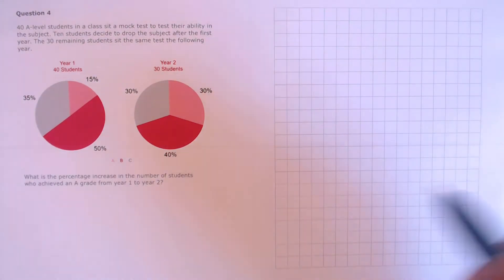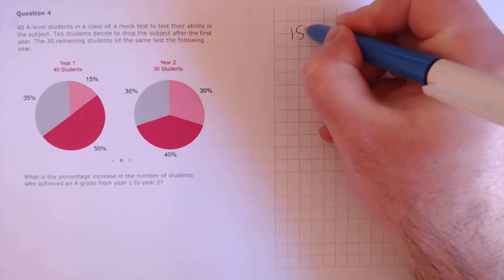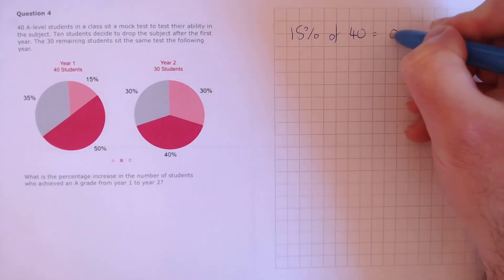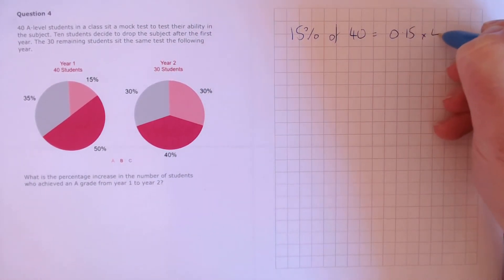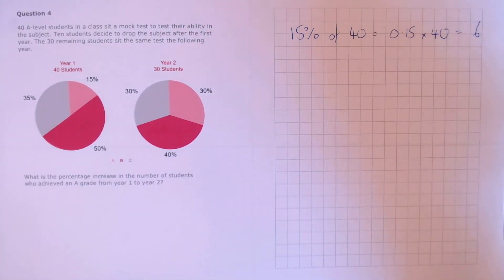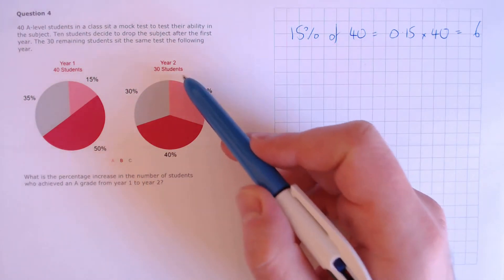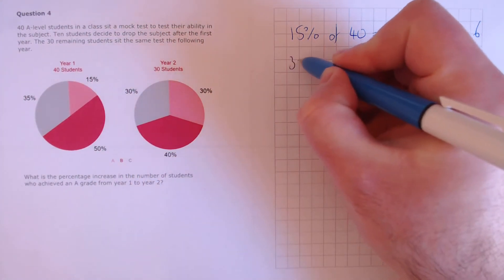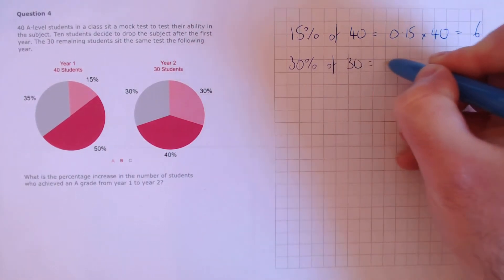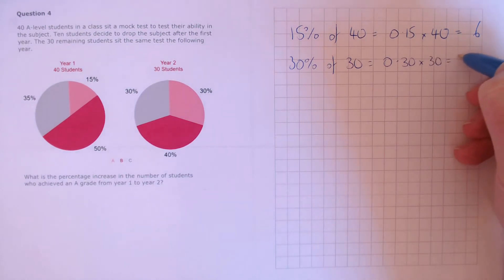To do this, first we need to find 15% of the year one students. 15% of 40 gives us the year one count. For year two, 30% of the year two students achieve grade A, so that's 30% of 30, which is 0.30 times 30, which equals 9.